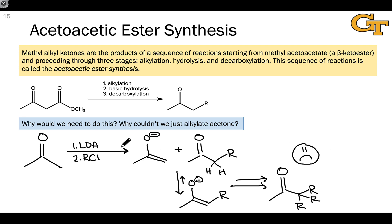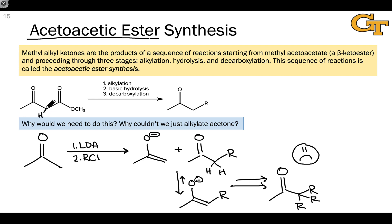If we want to alkylate acetone only once, we have to be more deliberate in our approach. The approach we use to get around these issues is called the acetoacetic ester synthesis. In essence, we take advantage of the fact that beta-keto esters are strongly acidic at the carbon between the two carbonyl groups, and the fact that we'll be dealing with an ester enolate — so there's really only one alpha carbon that can be deprotonated, and we can remove the ester later.